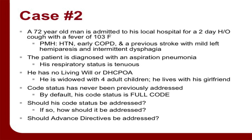Case two is the middle category: a 72-year-old man admitted for a two-day history of cough and fever of 103 degrees. He has a past medical history of hypertension, early COPD, previous stroke with left mild hemiparesis, and intermittent dysphagia. He now has aspiration pneumonia and his respiratory status is getting tenuous. He also has no living will or power of attorney for healthcare. He's widowed with four children and lives with his girlfriend — a red flag, as it's unclear who the surrogate would be. Code status has never been addressed; he is full code by default.